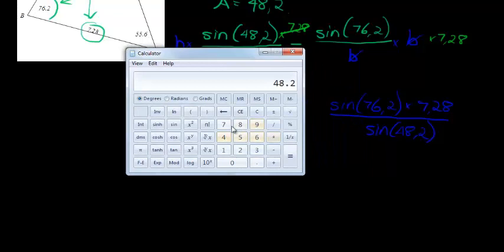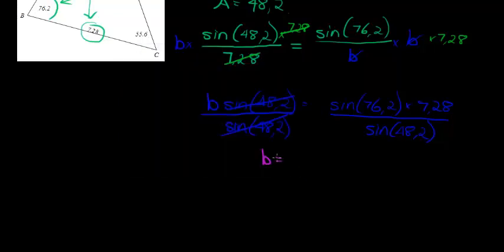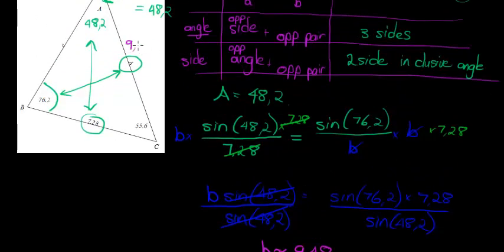So, let's calculate that. We've got sine of 76.2, my calculator works like this, I have to press sine afterwards, times 7.28, is equal to, now that gets divided by sine of 48.2. There you go, you can see it, and that's the value for sine of 48.2. If I click equal, I get 9.48, two decimal places, so rounded, I get 9.48 units. That is the value for B.